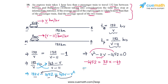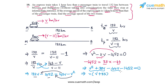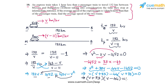Splitting the middle term: v² plus 33v minus 44v minus 1452 equals 0. From the first pair, taking v common gives v(v plus 33). From the second pair, taking minus 44 common gives minus 44(v plus 33). Taking (v plus 33) common gives (v plus 33)(v minus 44) equals 0.